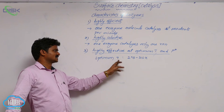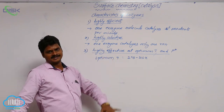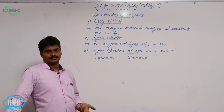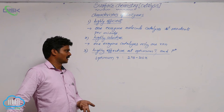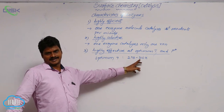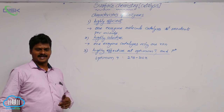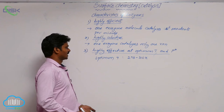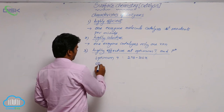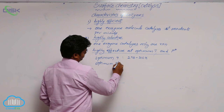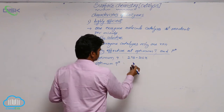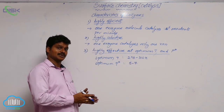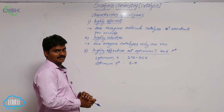In the body, enzymes are effective because our body temperature is around 310 Kelvin, which is within the optimum temperature range. The optimum pH for enzymes in our body is in the range of 5 to 7, and enzymes work effectively within this pH range.